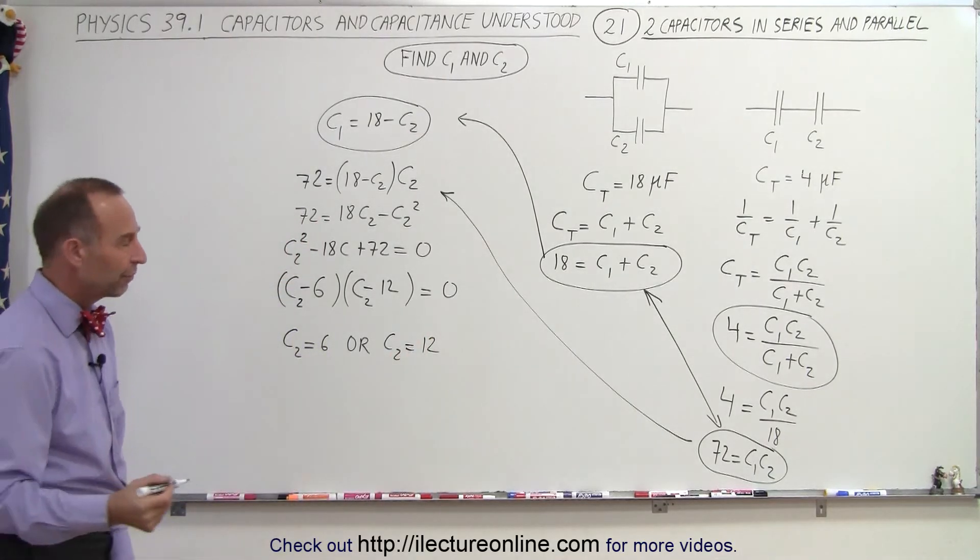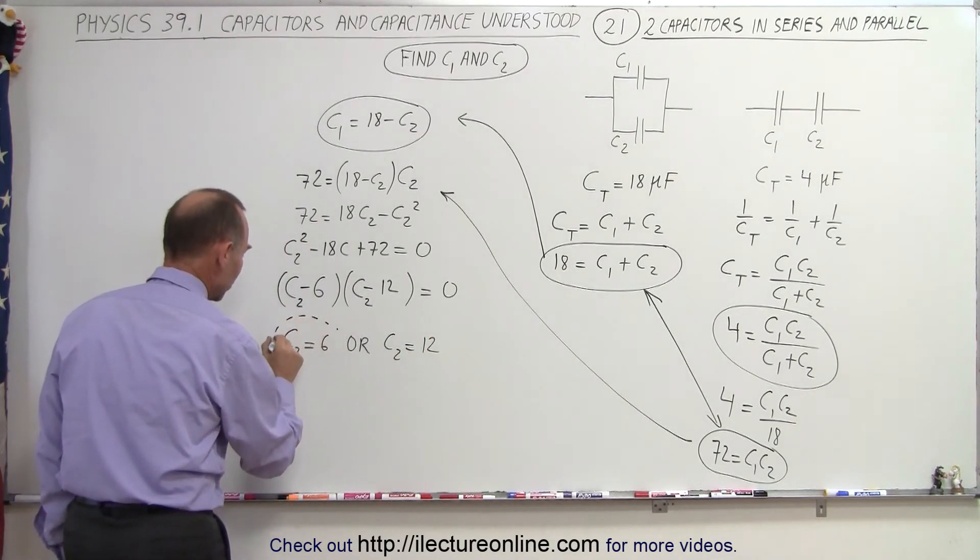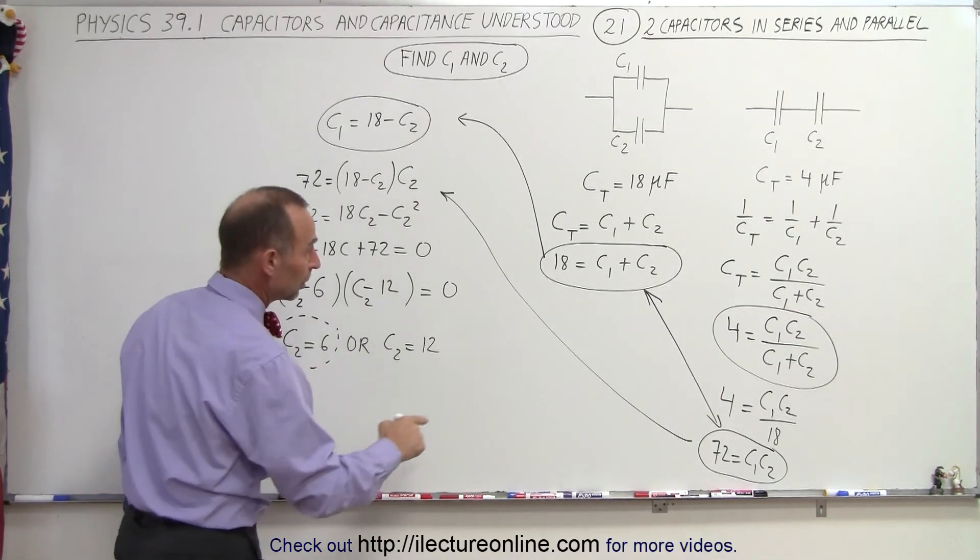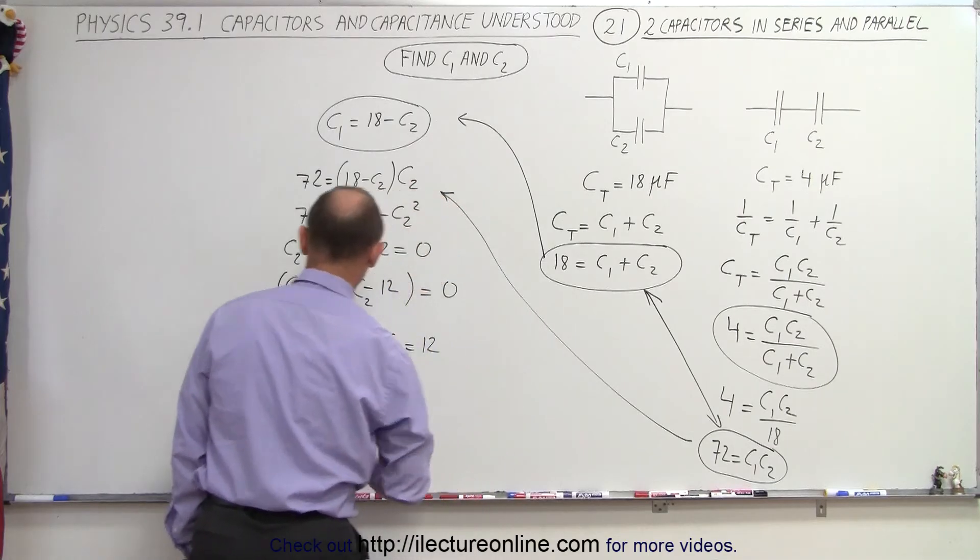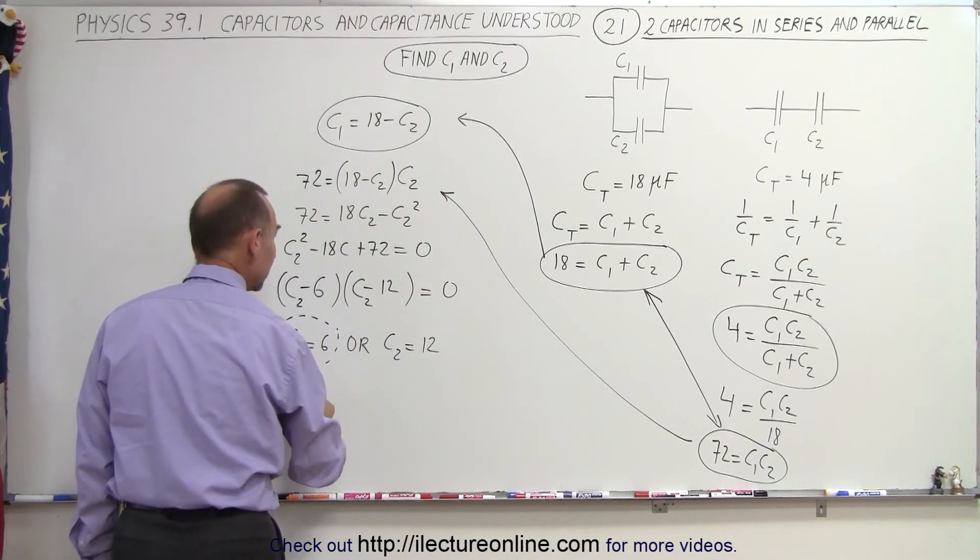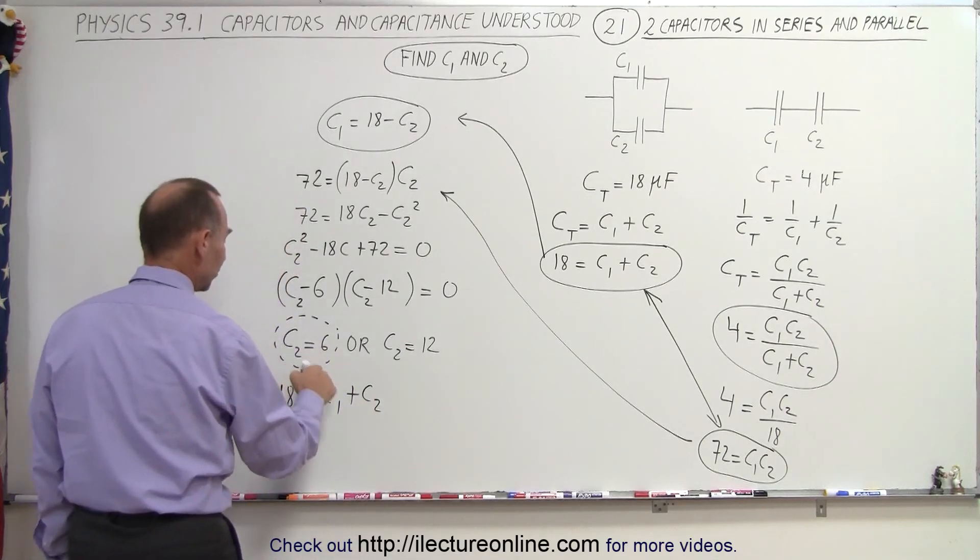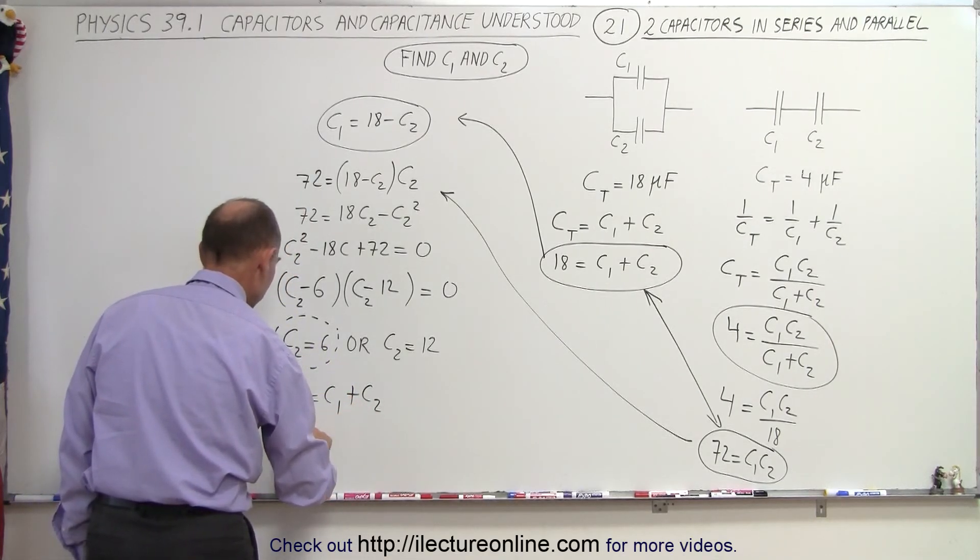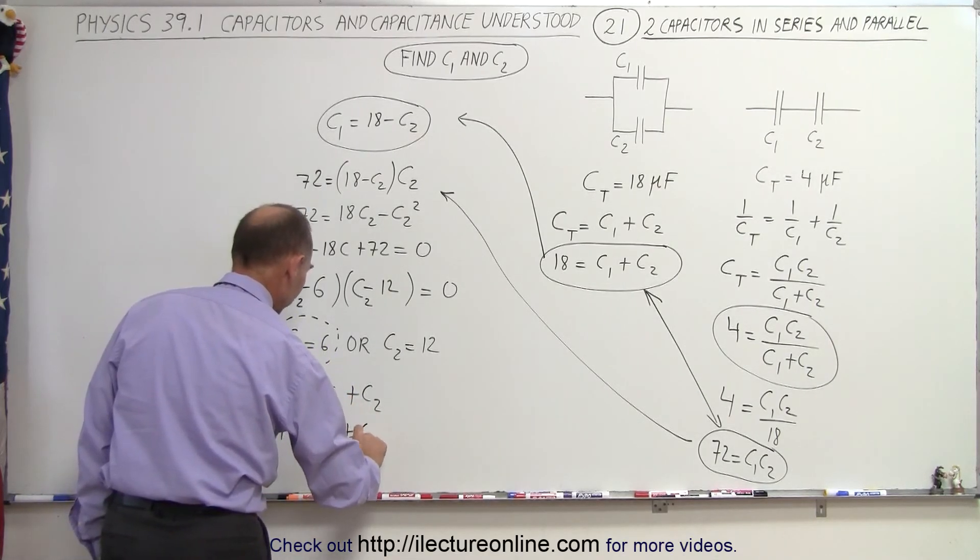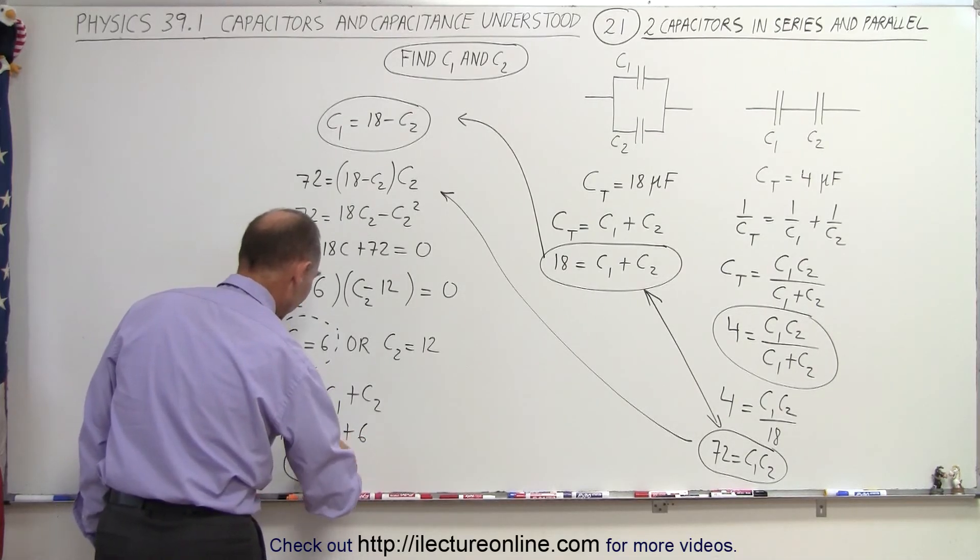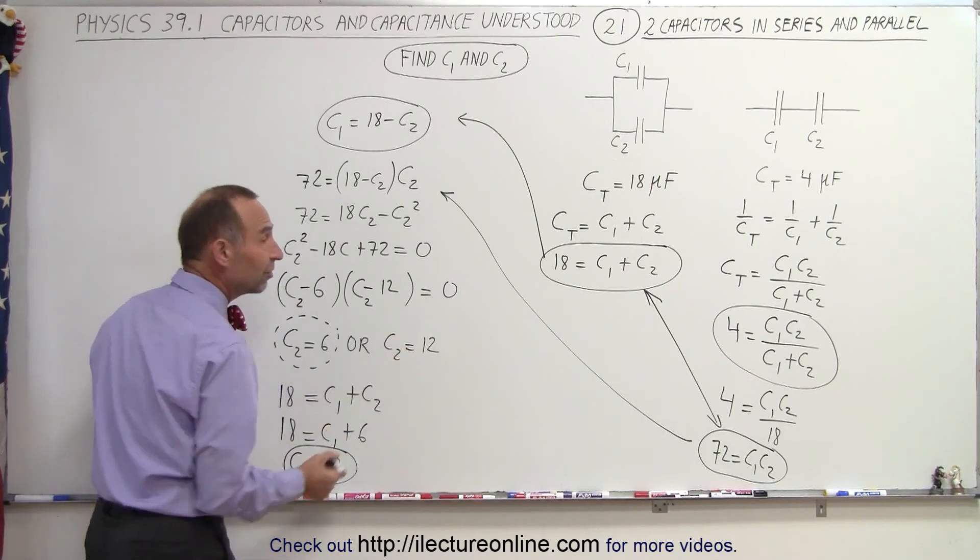Well, let's take one of our solutions. Let's take C2 equals to six, and we plug that back into this equation right here. So we have 18 is equal to C1 plus C2, but if C2 is equal to six, that means 18 is equal to C1 plus six, or C1 is equal to 12.